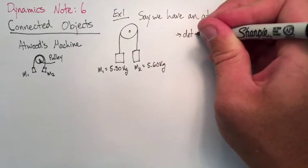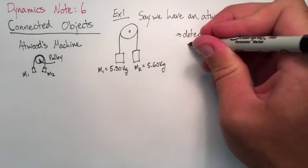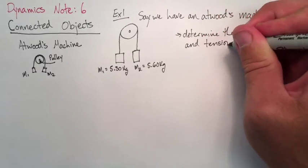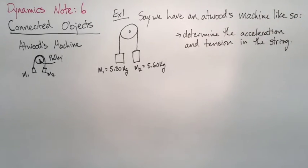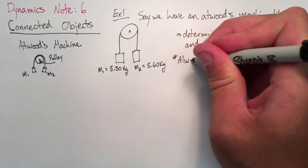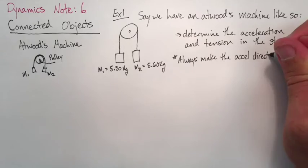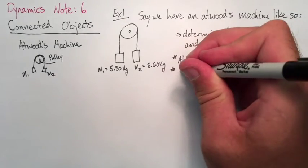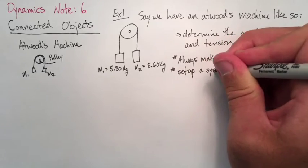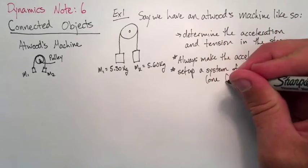Now because mass two is heavier we should expect it to accelerate in that direction. So we're going to determine the acceleration and the tension in the string. We always in these questions want to make the acceleration direction positive. That will keep things simple in our math. And the other thing we want to do is set up a system of equations for each of the masses that are moving.